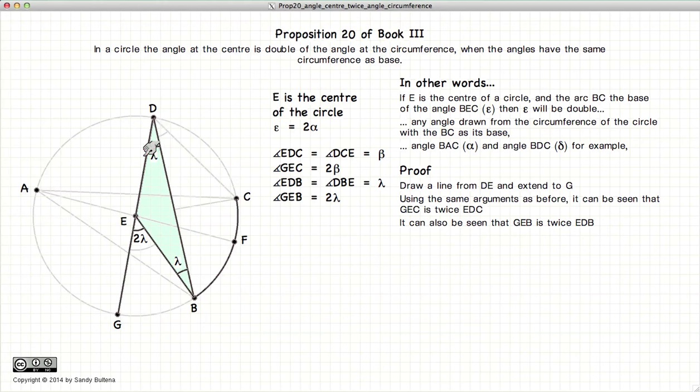Now if we look at EDB, the triangle is also an isosceles. This time we will label the base angles as lambda. The exterior angle is the sum of these two, or 2 lambda.